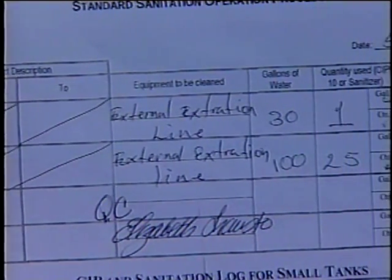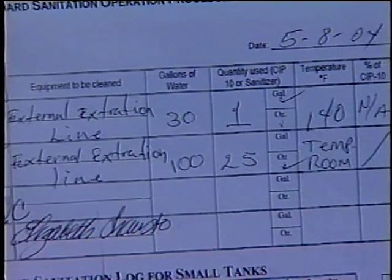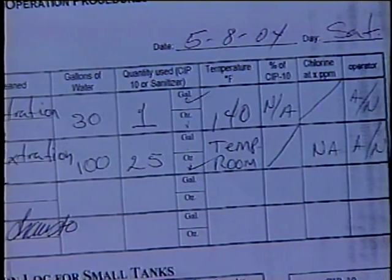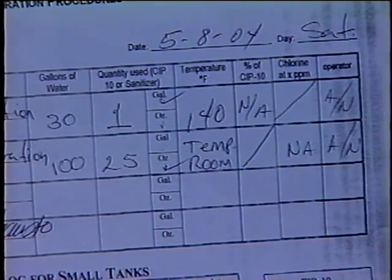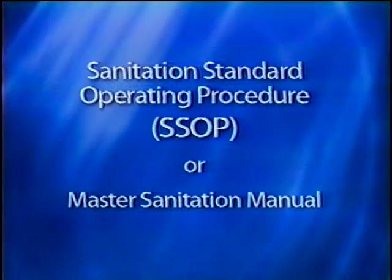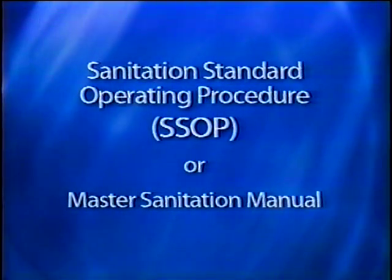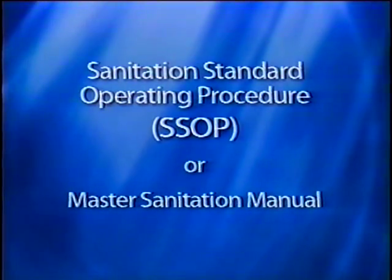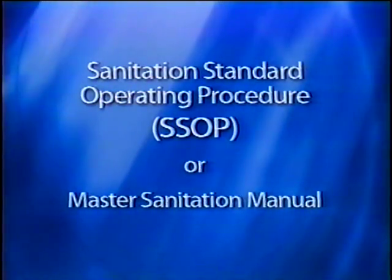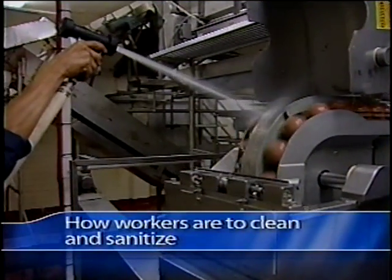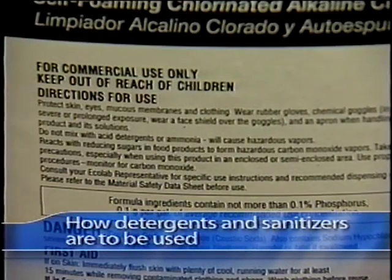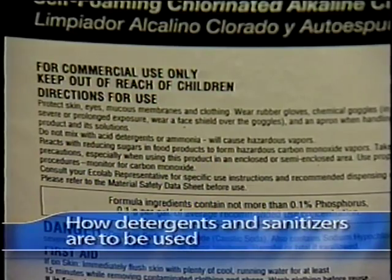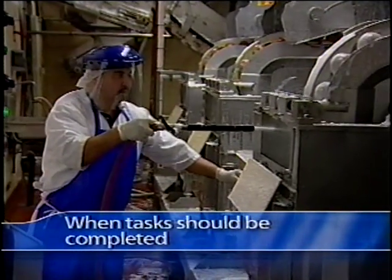All cleaning and sanitation activities should be documented in writing and be reviewed by a supervisor. This provides for uniformity in these activities and allows for changes if the need comes to light. Most firms utilize a Sanitation Standard Operating Procedure, SSOP, or Master Sanitation Manual that documents in detail how workers are to clean and sanitize, how detergents and sanitizers are to be used and mixed, and how and when tasks should be completed.